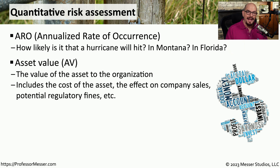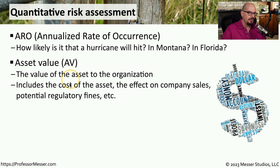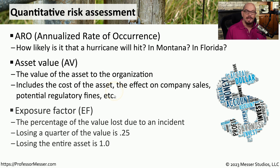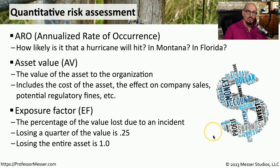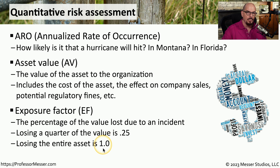We might also want to assign an asset value to that risk, or AV. The asset value is the value of that asset to the organization. That doesn't necessarily mean it's the replacement cost, because the asset value could include the effect on company sales, any fines that you might receive when that particular risk is realized, and any other costs. Another important value is the exposure factor, abbreviated as EF. This is the percentage of the value that was lost due to that particular risk. So if we lose a quarter of the asset, the exposure factor is 0.25, and if we lose the entire asset, the exposure factor is 1.0.